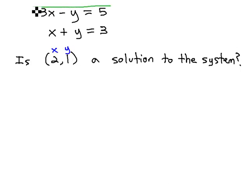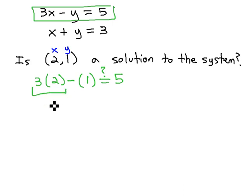So let's plug into the first equation and see if (2,1) works in the first equation. 3x or 3 times 2 minus y, which is 1, and we want to know if it equals 5. Really quick with order of operations, we know 3 times 2 is 6 minus 1.